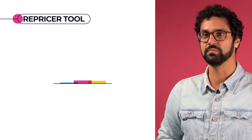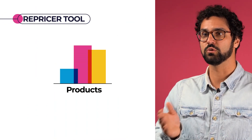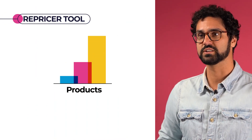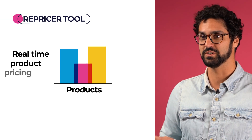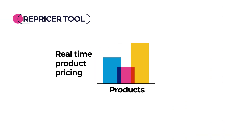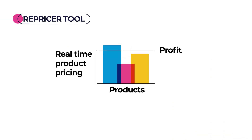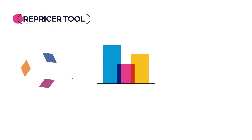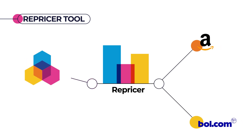A repricer tool helps you solve this problem by lowering or raising your product's pricing in real time. Through a predetermined pricing strategy, you can maximize your profit margin, capture the buy box on Amazon or bol.com, and ultimately outperform your competitors.